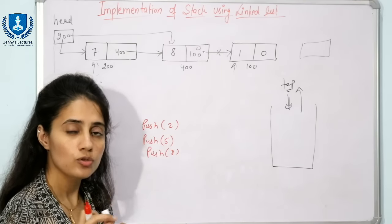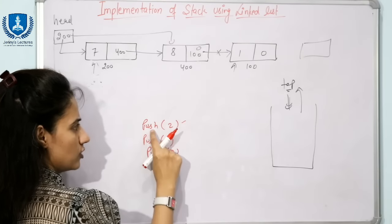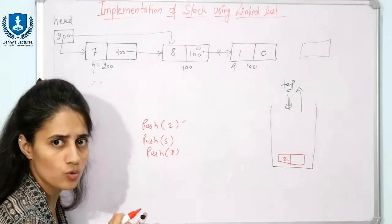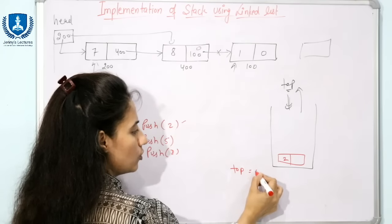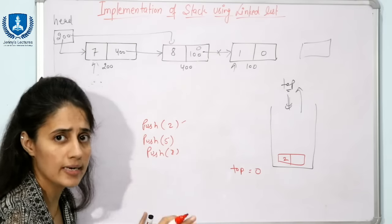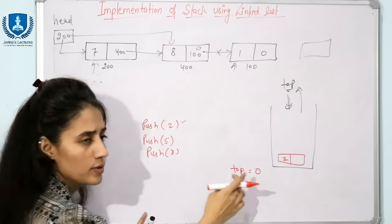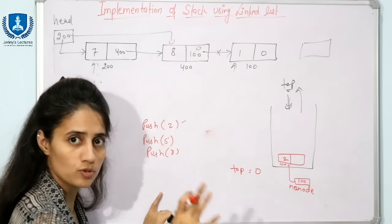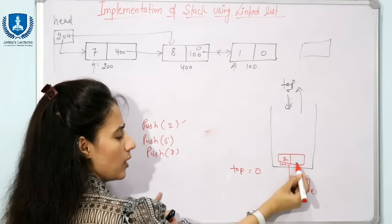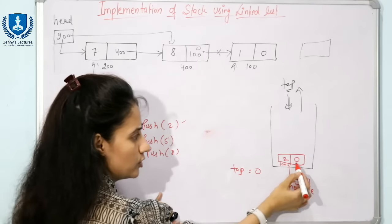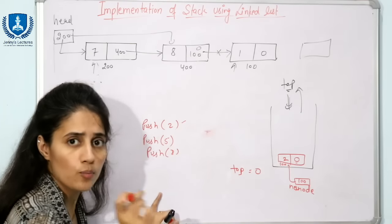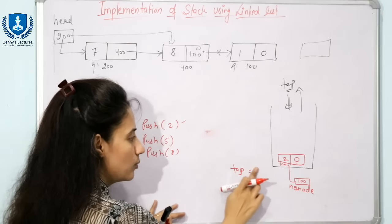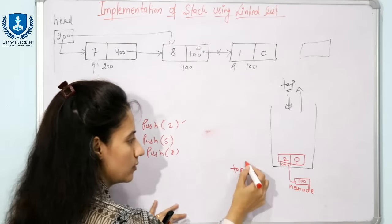Now let's see the push operation step by step. Initially top is equal to null. Suppose we call push(2). We create a node with data 2, and suppose its address is 100. We store the current top value (null) in the next part of this new node. After inserting, top should point to this node, so top is updated to contain 100 — the address of this new node.